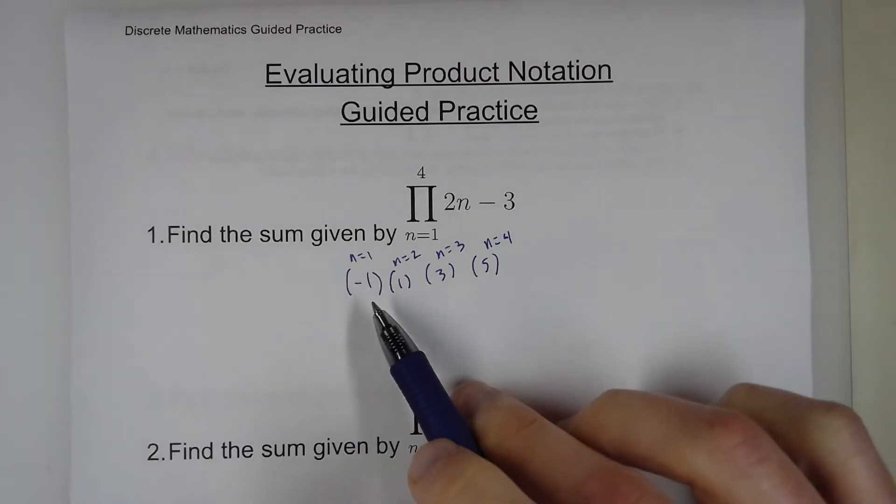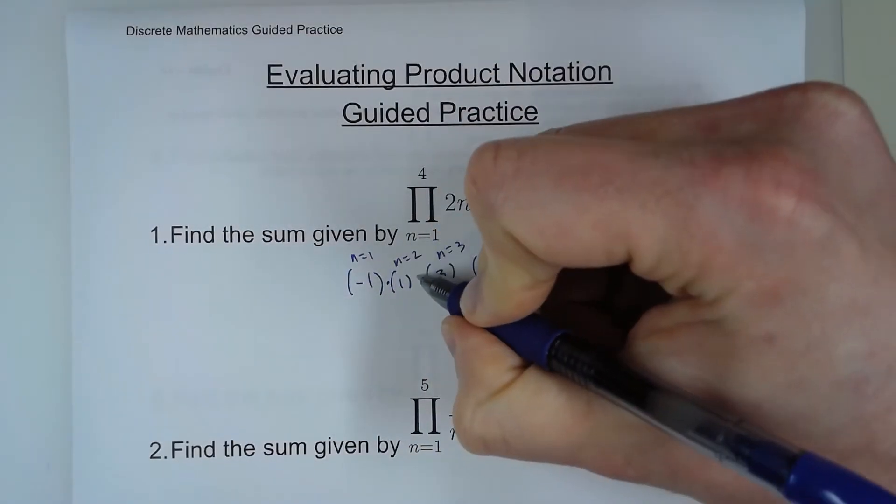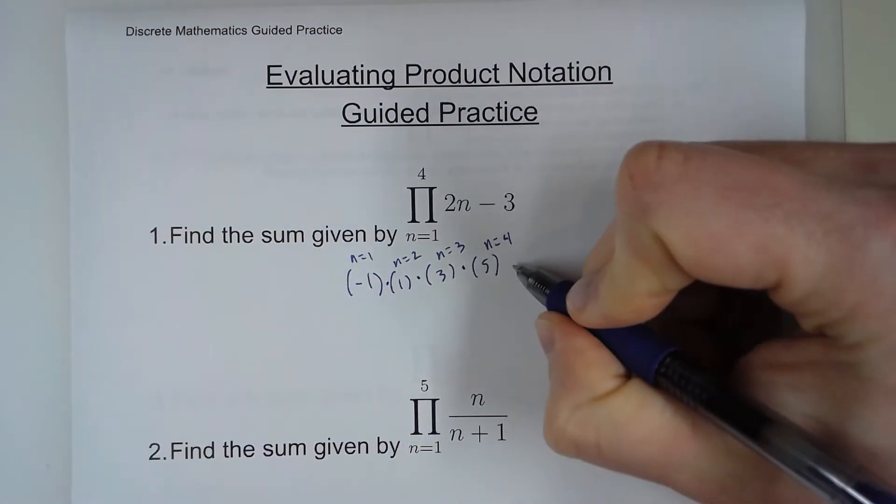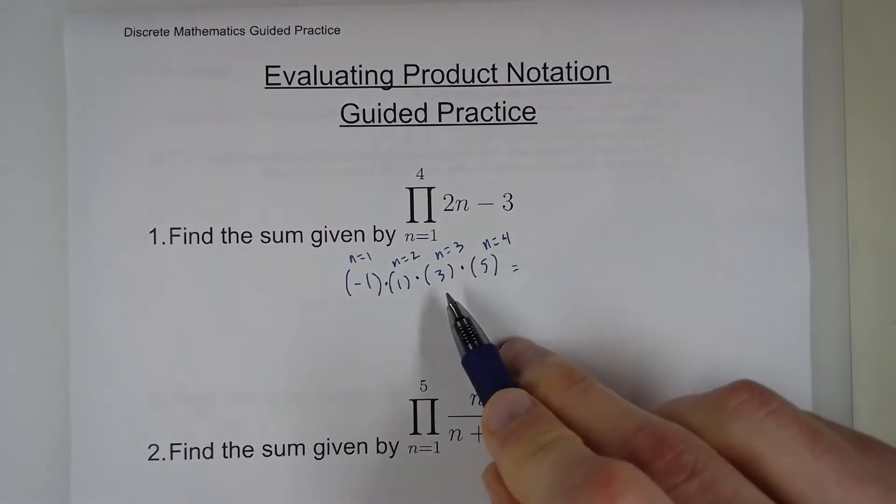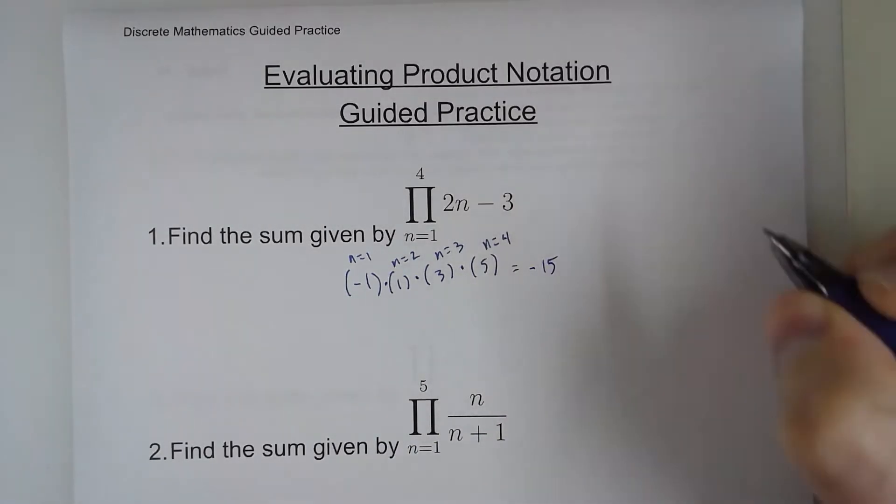I'm going to take these four terms and multiply them because that is what this product notation tells us. 5 times 3 is 15 times negative 1 is negative 15.